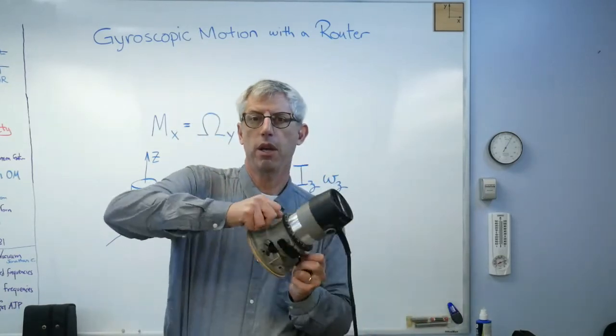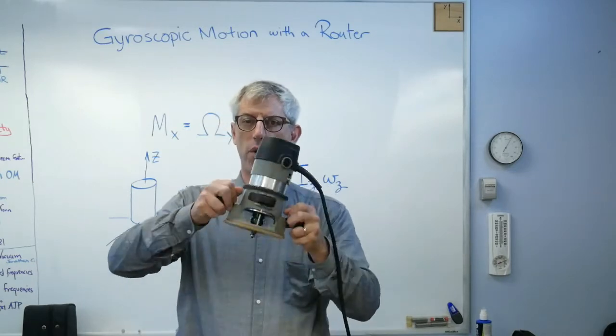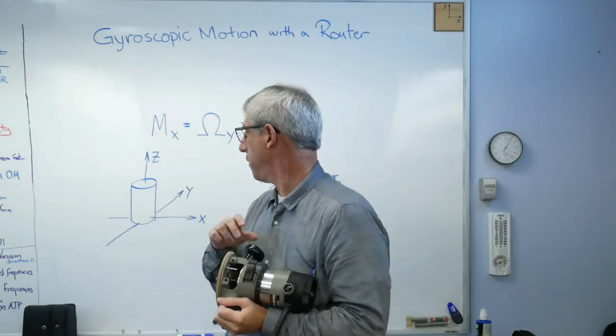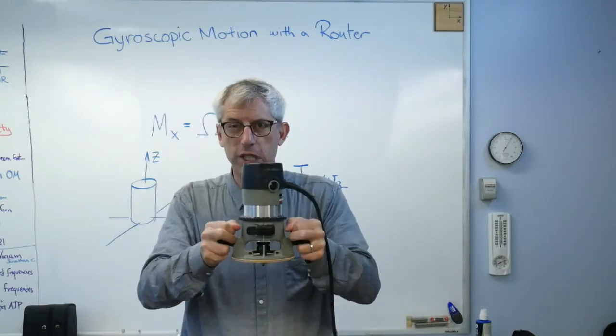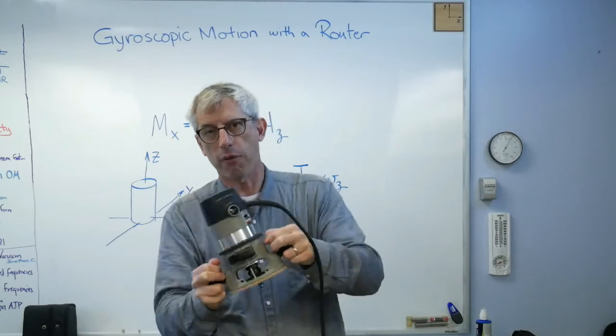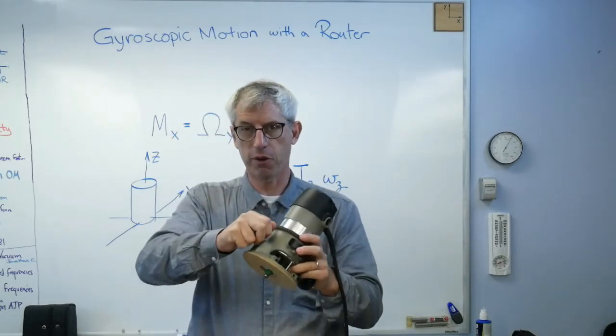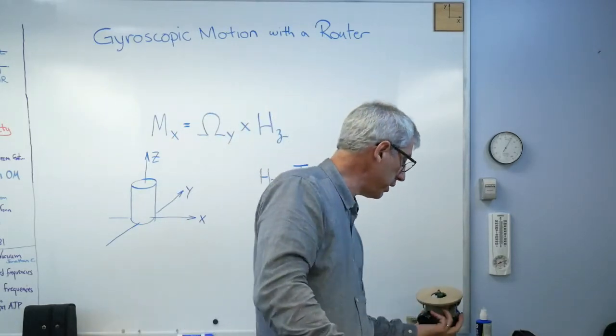Here, now that I got it stopped. Going back and forth like this, it kept wanting to go back and forth. That's that moment about the x-axis. Only when I really grabbed it and was able to counteract that moment by the force of my hands on these knobs was I able to get it to stop.